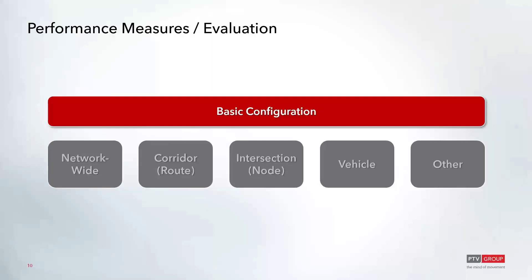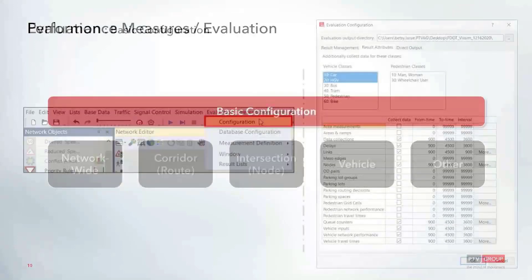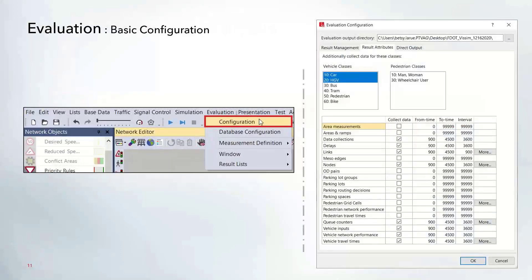To start, we're going to go over the basic configuration within Vissim. This involves setting up all the different types of data that are going to be collected and how to configure how that data is collected. We'll be working within the evaluation menu at the top, and the first thing we'll look at is the configuration option. Once selected, that opens up a window comprised of three different tabs, which we're going to go over in more detail.